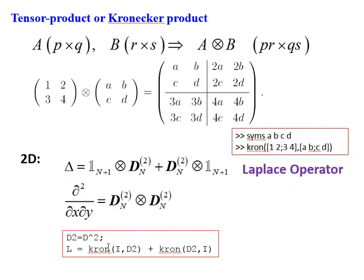Just two lines of code give us the matrix of the Laplace operator. D2 is the Chebyshev differentiation matrix squared. Then L is computed using the kron command: kron(I, D2) plus kron(D2, I). These two lines give us the full Laplacian operator matrix.